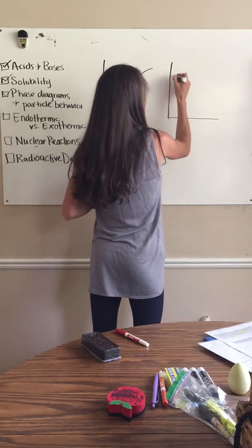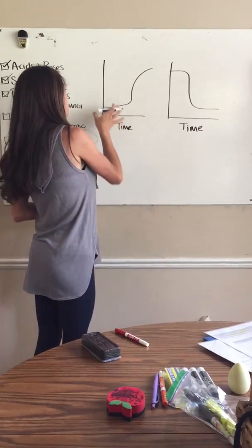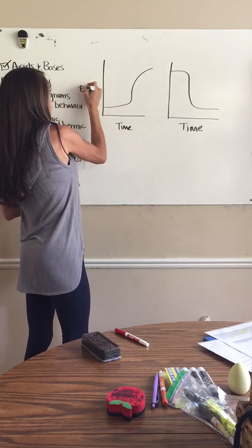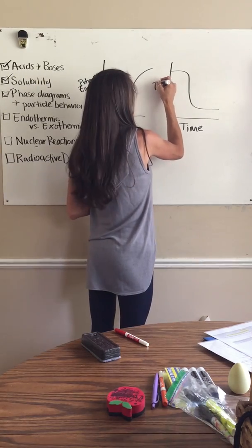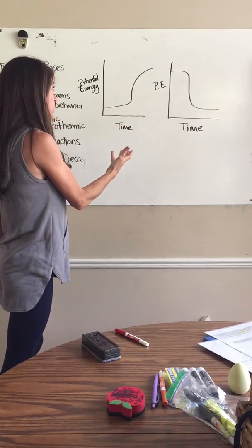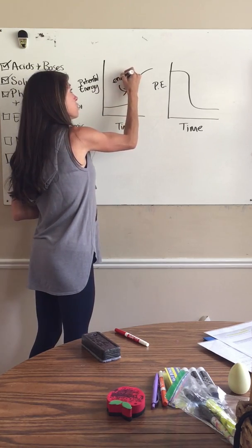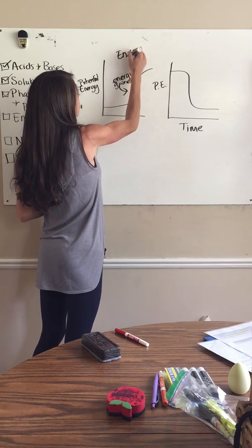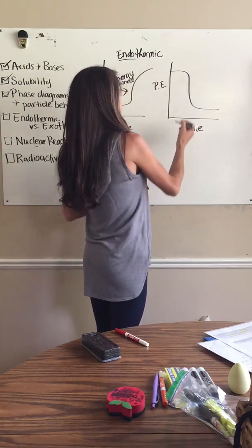This is what these graphs look like. The x-axis is reaction time — from the beginning of the reaction to the end. The y-axis is your potential energy, which is stored chemical energy. With this graph alone you should be able to tell which is exothermic and which is endothermic. If potential energy is low at the start but ends up high, that means energy had to be brought in — energy is absorbed, gained, added. That is an endothermic graph — energy gained.